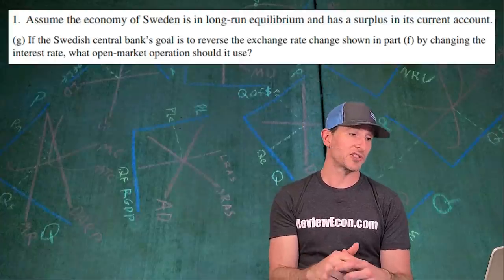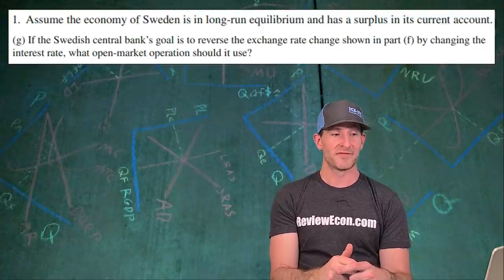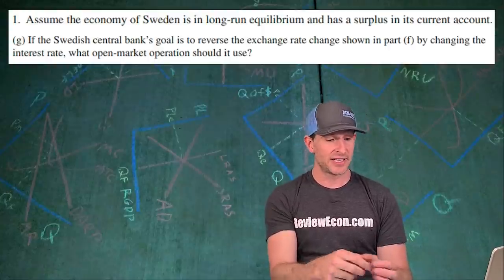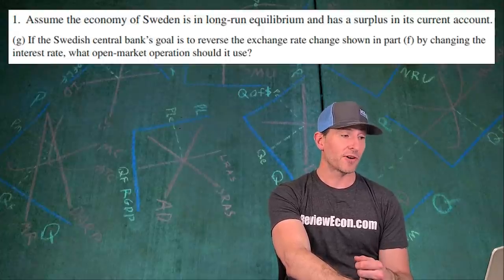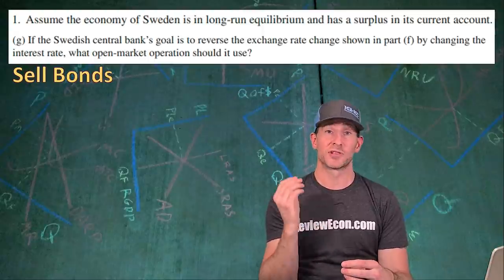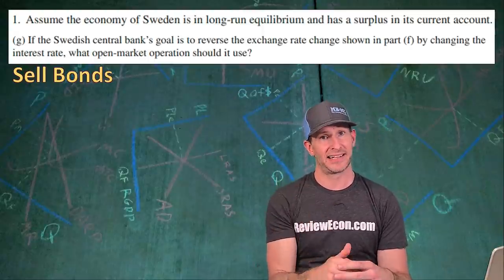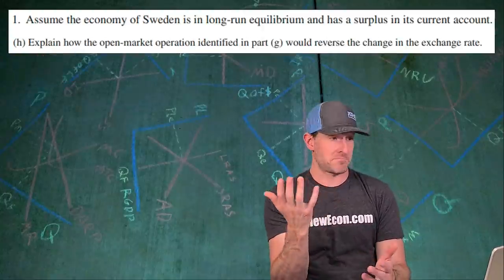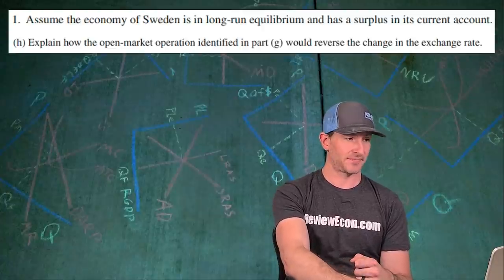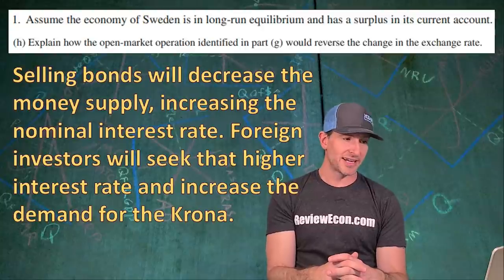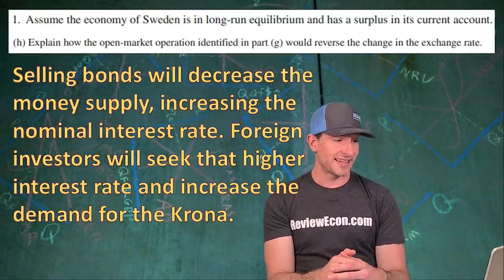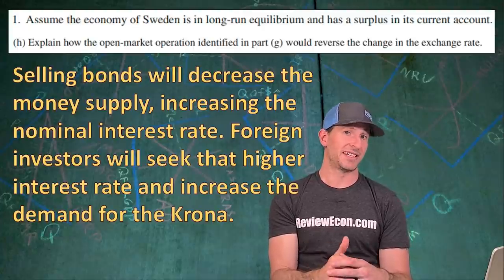If the Swedish central bank's goal is to reverse the exchange rate change shown in part F by changing the interest rate, what open market operation should it use? We just saw the exchange rate decrease, and now we want it to increase again. The way to do that is by selling bonds, because that will increase the interest rate. When the interest rate is higher, foreign investors will seek that higher interest rate and start demanding Swedish currency again. Selling bonds decreases the money supply, increasing the nominal interest rate, and foreign investors increase demand for the krona.